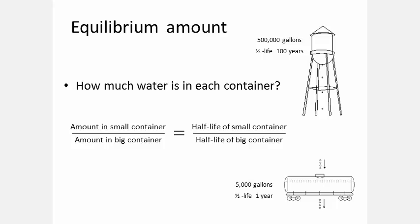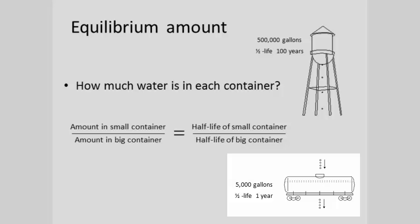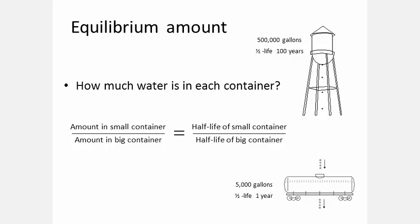So what's the equilibrium amount for a given container? For example, let's say that the half-life of the railroad tanker car is one year, and the half-life of the city water tank is 100 years. Because the railroad tanker car tends to leak 100 times faster than the city water tank, it must contain only one hundredth as much water to be leaking at the same rate.